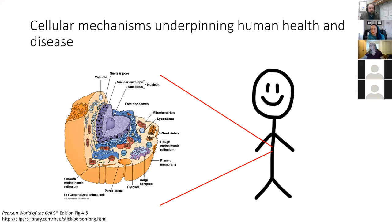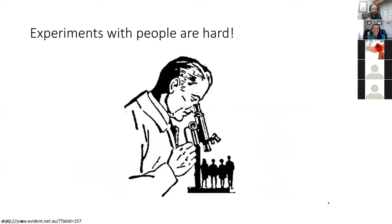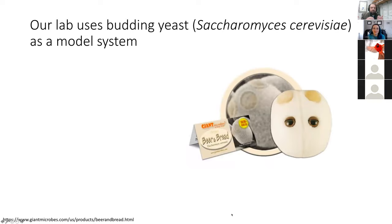My lab at Ball State is broadly interested in understanding cellular mechanisms underpinning human health and disease. However, fundamental experimentation on human subjects is not always technically feasible, ethically advisable, or financially possible. So many cell and molecular biology labs rely on model organisms — well-characterized species that share a number of important similarities with human cells. The organism used by my research team is Saccharomyces cerevisiae, or budding yeast. You're probably familiar with some of budding yeast's greatest hits, including beer and bread.